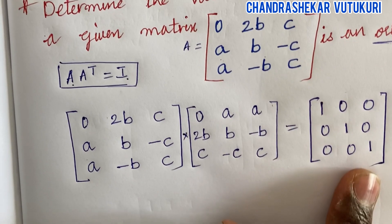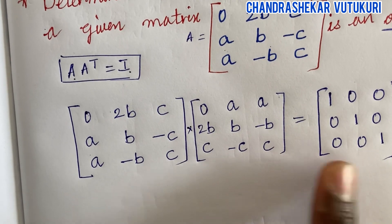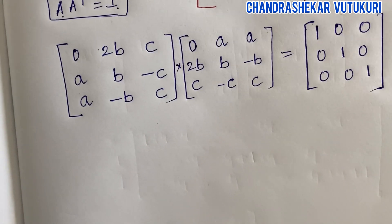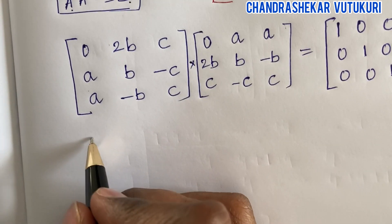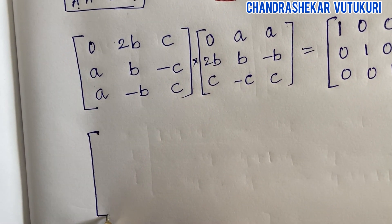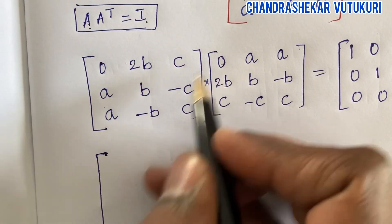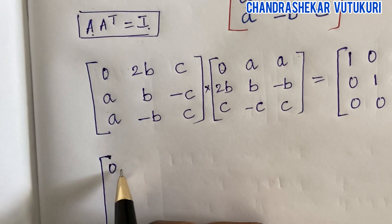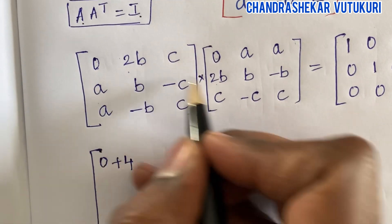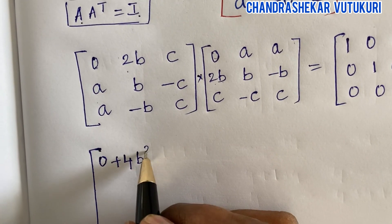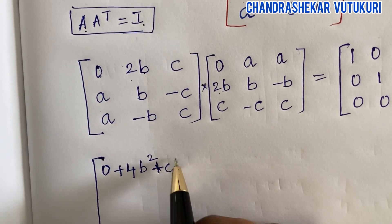This is an identity matrix, so this is in the form A times A transpose equals I. Now we are supposed to do the matrix multiplication and equate. For the first element: zero times zero is zero, plus two times two is four, and b times b is b squared, and c times c is c squared.